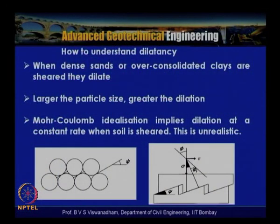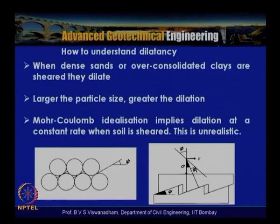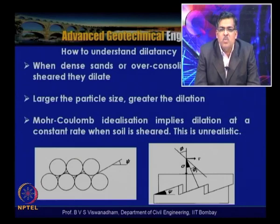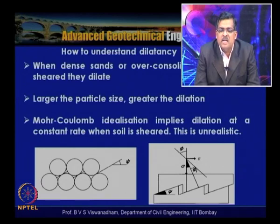When dense sands or overconsolidated clays are sheared, they tend to dilate. Larger particle size results in greater dilation; decreasing particle size suppresses the dilation tendency. Increasing normal stress and overburden also suppresses dilation. The Mohr-Coulomb idealization implies dilation at a constant rate, which appears unrealistic.